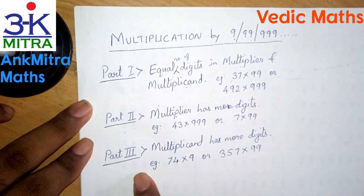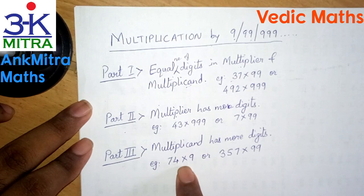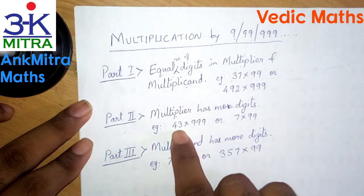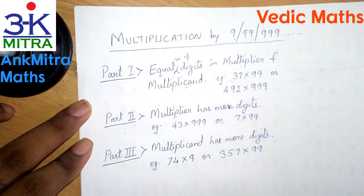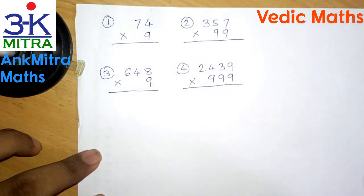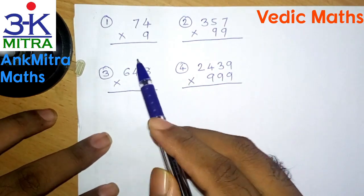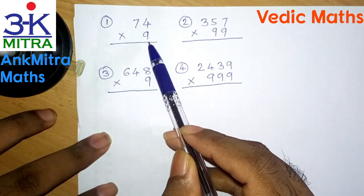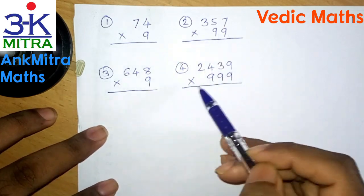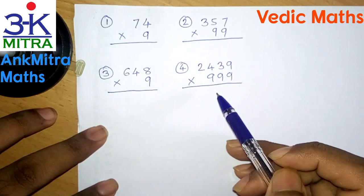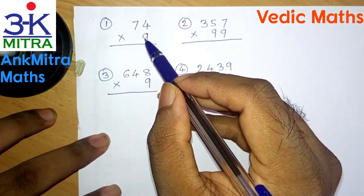Now in Part 3, the multiplicand will have more number of digits, and this method is slightly different to the previous two methods. So let's look at a few examples. I have written down 4 examples here on the paper. In the first sum we have a 2-digit number multiplied by a single 9. Let's look at the first example — we have 74 multiplied by 9.